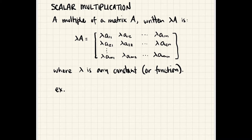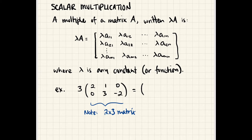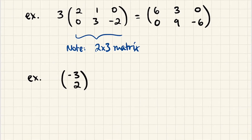Let's look at some examples of scalar multiplication. We could have 3 times the matrix (2, 1, 0 / 0, 3, −2). Note this is a 2 by 3 matrix, not a 3 by 2 matrix — always number of rows followed by number of columns. The size is irrelevant for scalar multiplication. We simply multiply each individual entry by 3. One context we'll see in Chapter 8 is scaling a matrix by a function, giving entries like −3eᵗ and 2eᵗ.